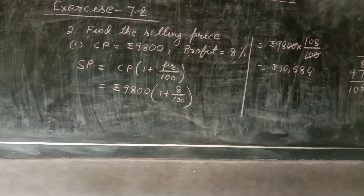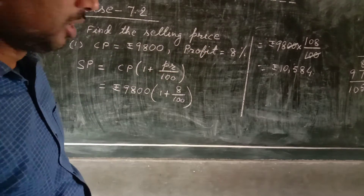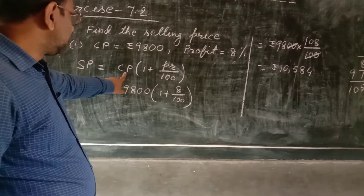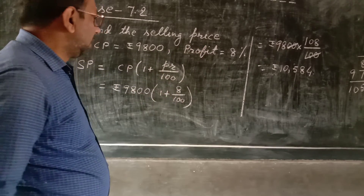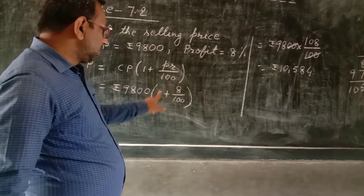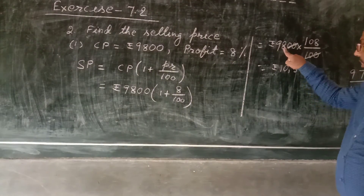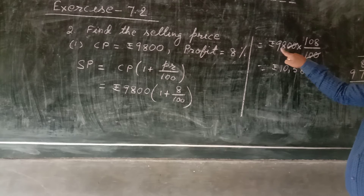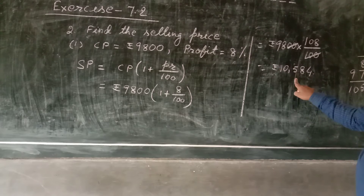Question number 2, roman number one: find the selling price when cost price and profit are given. CP is 9800 and profit is 8%. Using the formula SP equals CP into (1 plus profit by 100), we get 9800 into 108 by 100. Cancelling zeros, 98 into 108 equals 10584. So selling price is Rs. 10,584.